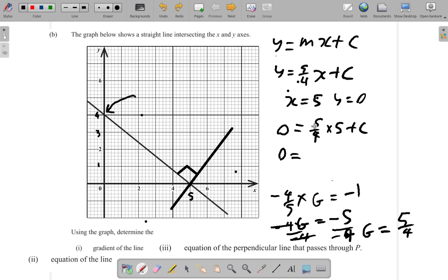0 is equal to 5 over 4 times 5, 25 over 4 plus C, right?